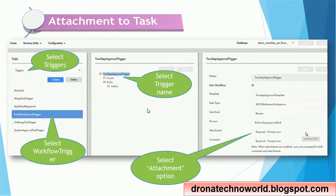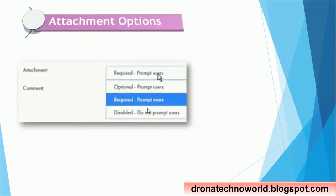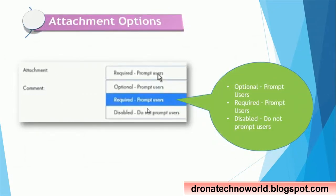For the attachment option, there are three options available: optional prompt users, required prompt users, and disable — do not prompt users. If you are not sure whether a document is required, select optional and the user may or may not provide one. If you select required prompt user, the user must provide a document while submitting the task. You can also disable this option so that the document step is skipped entirely.